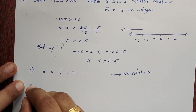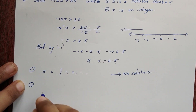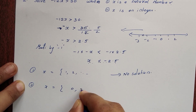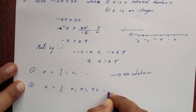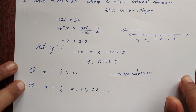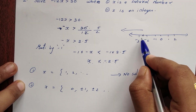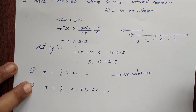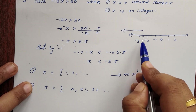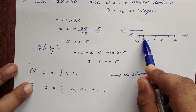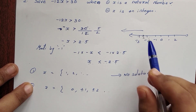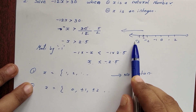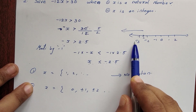Second option: x is an integer. Integers include 0 and negative and positive values. Since x < -2.5, we cannot take -2.5 itself as an integer value. The first integer less than -2.5 is -3.